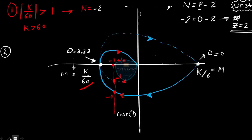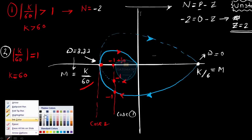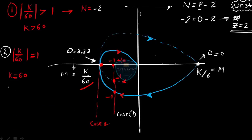Now Case 2: the critical point −1+j0 is exactly on the Nyquist plot, meaning k/60 = 1, so k = 60. In this case, the number of encirclements N = 0. Using N = P − Z: 0 = 0 − Z, so Z = 0. No closed-loop RHP poles — the system is stable at k = 60.